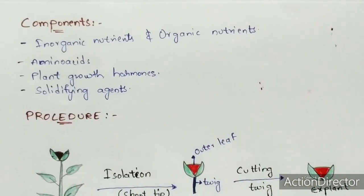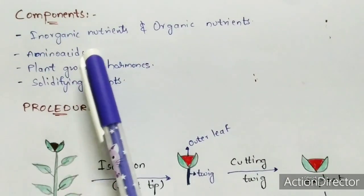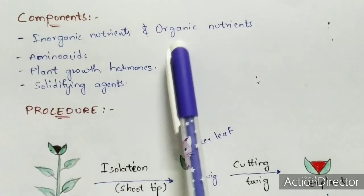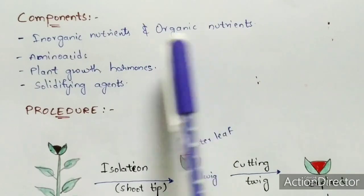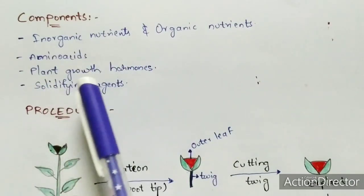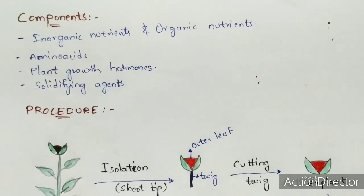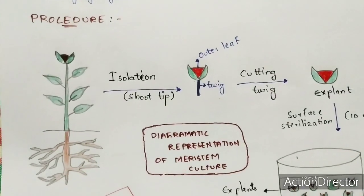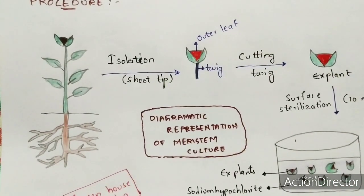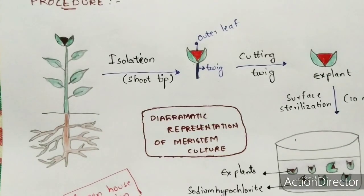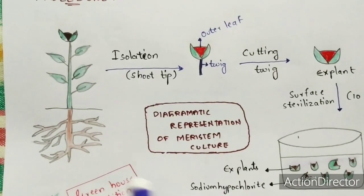The components mainly used for meristem culture are: inorganic nutrients, organic nutrients — which should be rich in vitamins — amino acids, plant growth hormones, and solidifying agents. These are the main important components used in the protocol of this plant tissue culture. Now let us see the diagrammatic representation and the protocol which is useful for practical purposes.